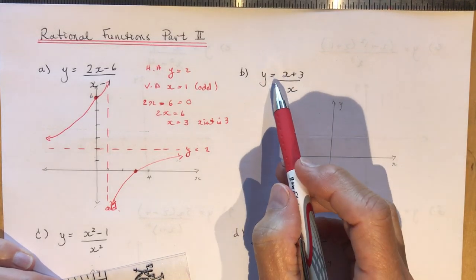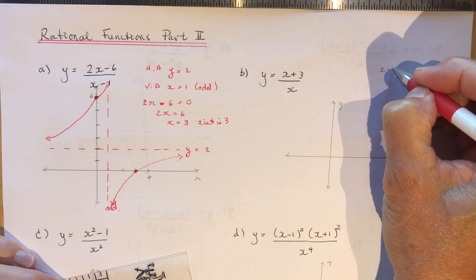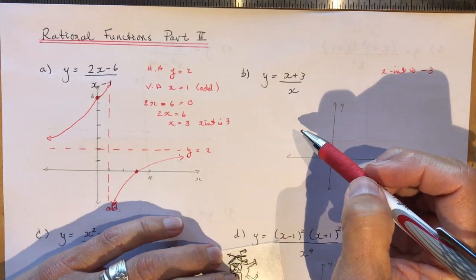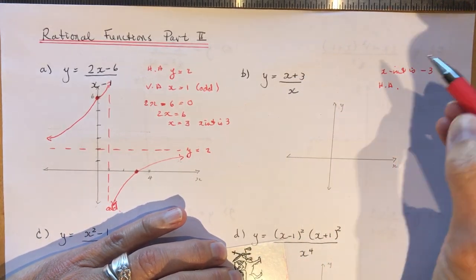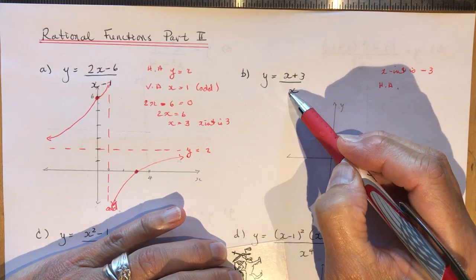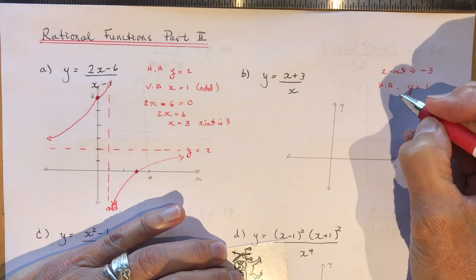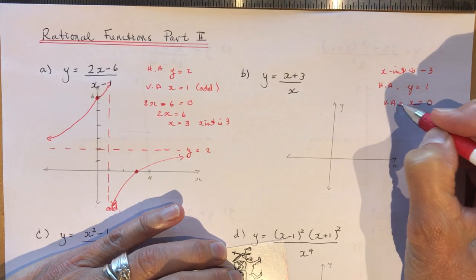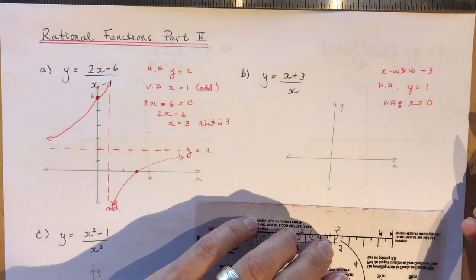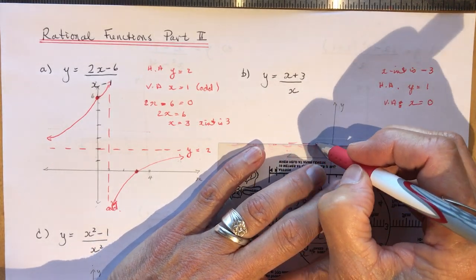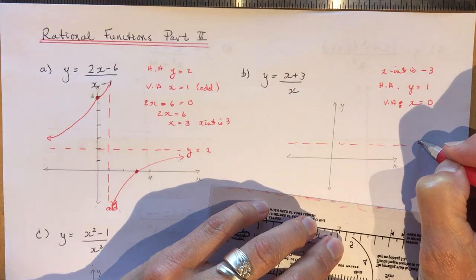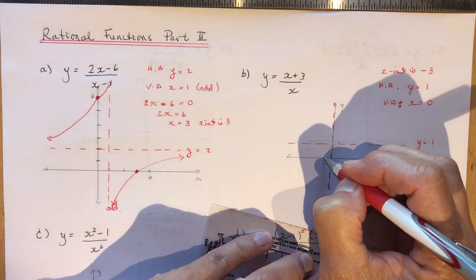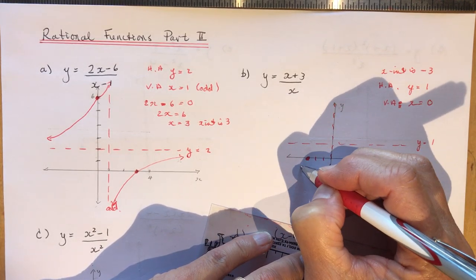Example B: y equals x plus 3 over x. The x-intercept is negative 3 — that's what makes the numerator zero. The horizontal asymptote: leading terms are 1 over 1, so y equals 1. The vertical asymptote is what makes the denominator zero, which is x equals 0. I have everything needed: horizontal asymptote at y equals 1, vertical asymptote at x equals 0, and x-intercept at negative 3.